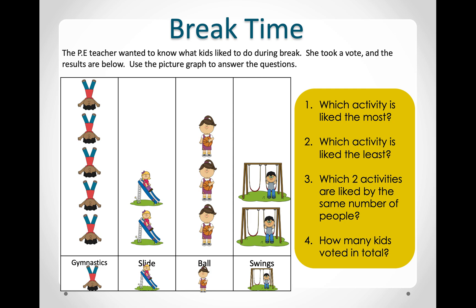Now we can see which two have the same number. Here we have five — is there any other one that has five? No. Here we have three — is there any other one that has three? No. And here we have two — is there any other activity that has two? Yes. So the slide and the swings are liked by the same number of people.